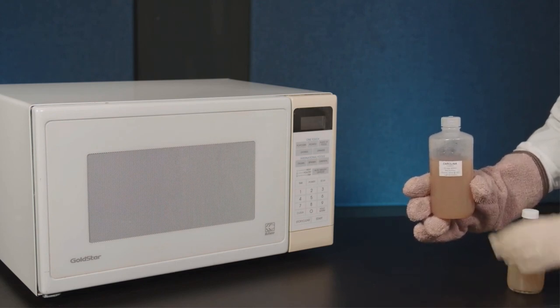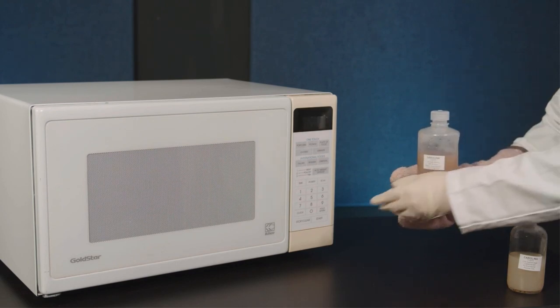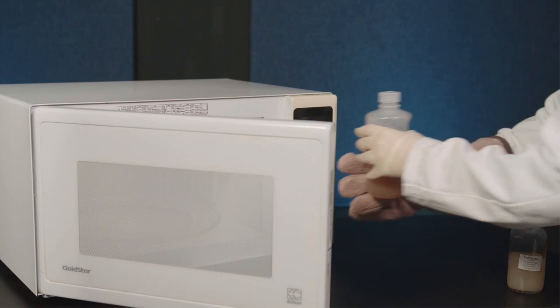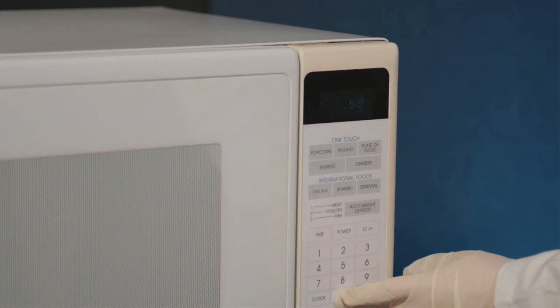To melt the bottle of agar in a microwave, first loosen the cap on the bottle. Place the bottle of agar in the microwave oven and allow the bottle to heat. Keep a careful eye on the bottle.